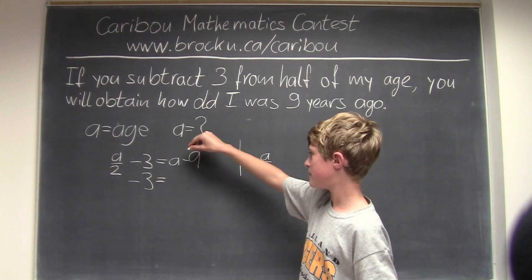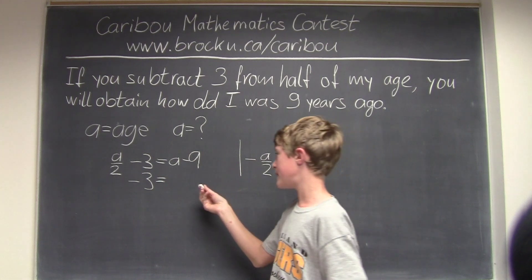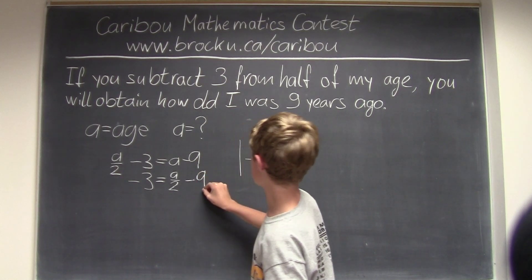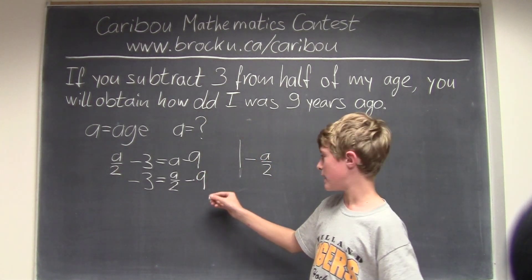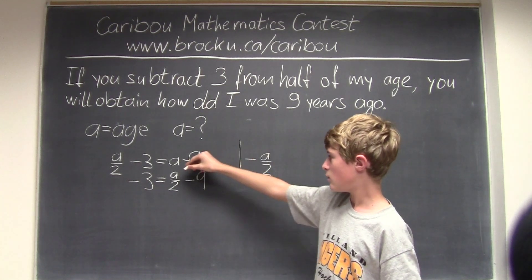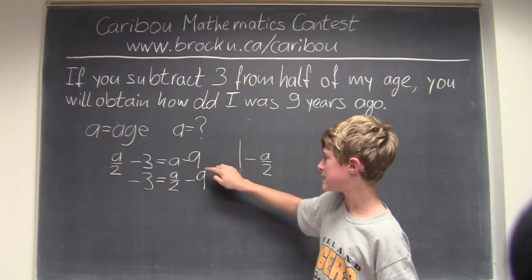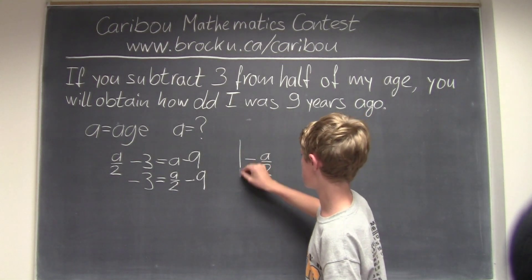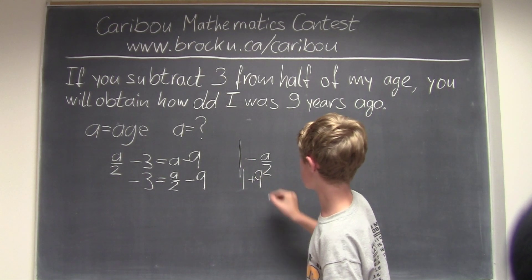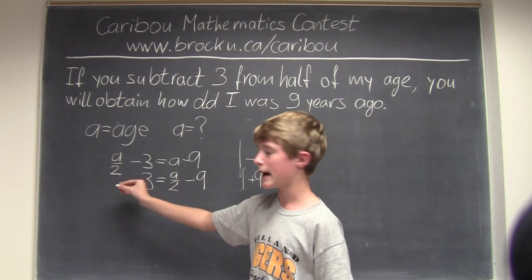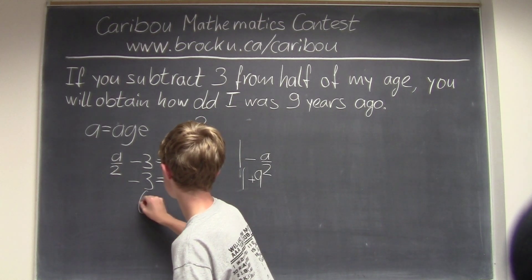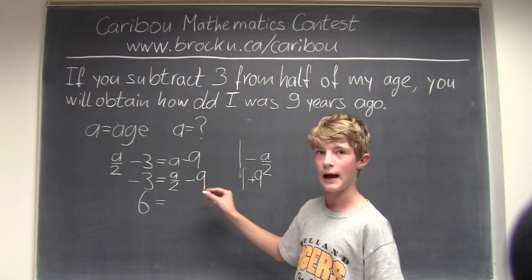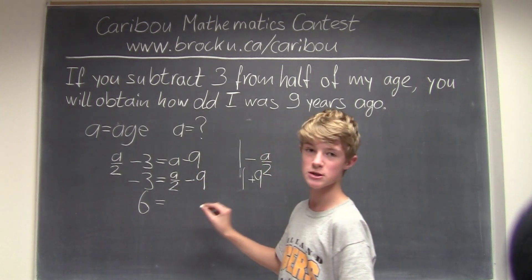Since we have minus 9 on the other side, we want to add 9 because we have A divided by 2 on this side and we want to isolate it. Since we have minus 9, we do the opposite, which is plus 9. On this side it would be 9 minus 3, which is 6. And on this side it would be A divided by 2, since the minus 9 and plus 9 cancel.